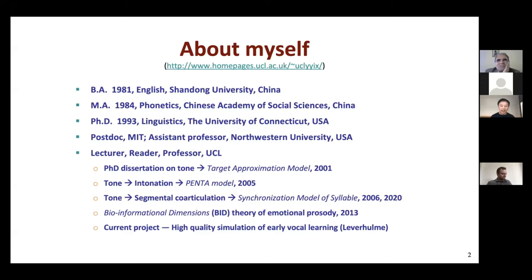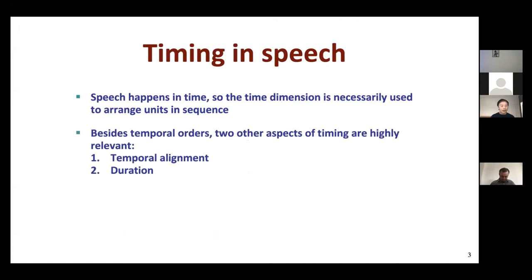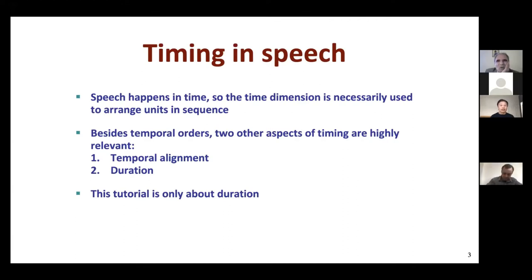But today's topic is very narrow. I'm going to talk about timing only, and in fact only one aspect of timing. Speech happens in time; when we speak, everything comes in a string, so the time dimension is already used to arrange units in sequence. Besides temporal orders, there are two other aspects of timing that are highly relevant: temporal alignment and duration. But today I'm focusing only on duration, because temporal alignment is a whole different thing.